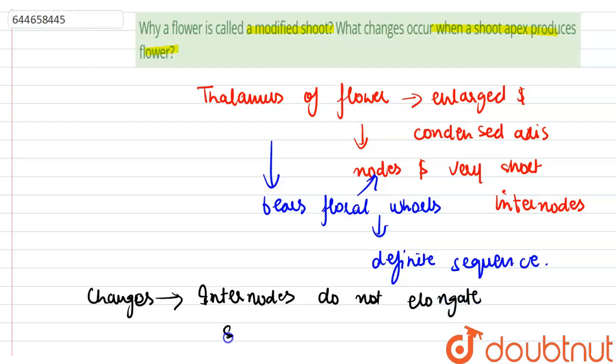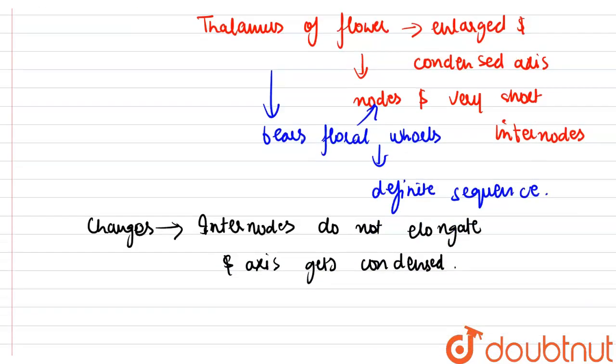The axis gets condensed, and the apex produces different kinds of floral appendages laterally.